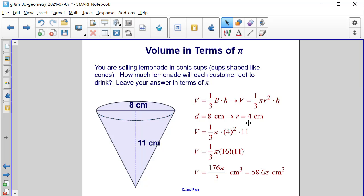And here's the solution for our problem. We did get the same final answer of 176 pi over 3 cubic centimeters. If you were to convert the improper fraction into a decimal, it would be 58.6 repeating, or 58 and 2 thirds pi cubic centimeters.